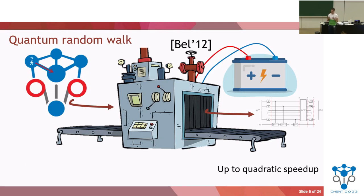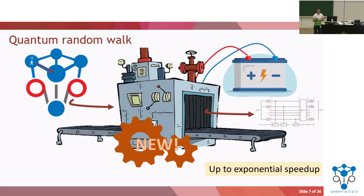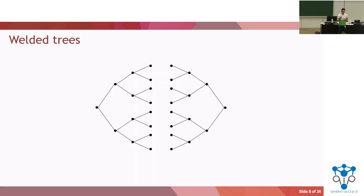As a result, if you now start with a classical random walk, we exhibit an example where the resulting quantum algorithm can actually achieve up to exponential speedup. If you're thinking about random walks and exponential speedup, many of you might start thinking about welded trees.